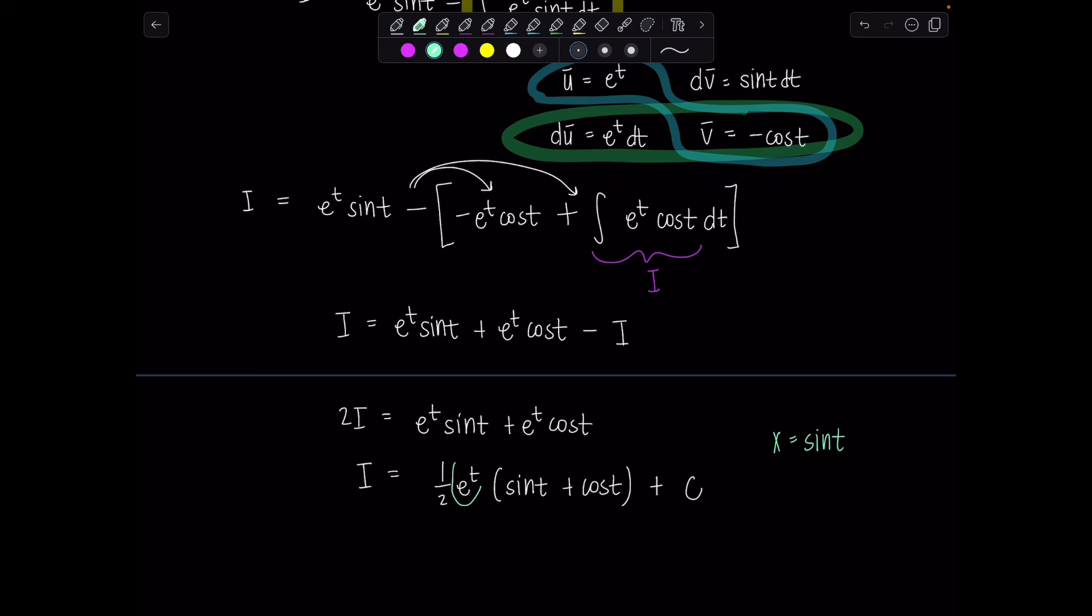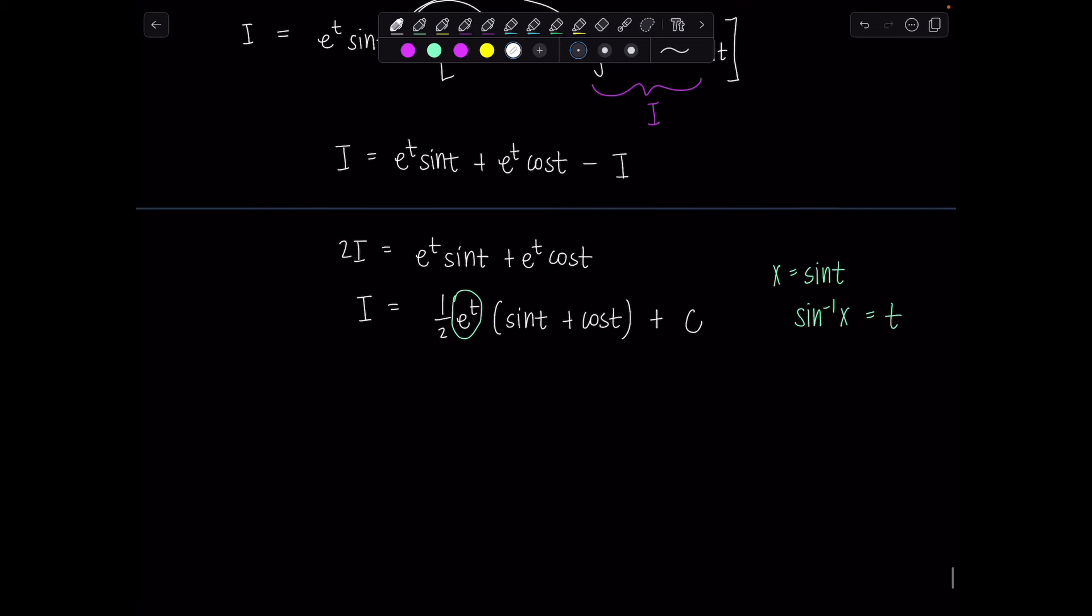Now we're not done. Because remember, the original variable in the problem was not t. It was x. So we got to get back there. So what was the substitution that we had made? We said that we let x equal sine t. And notice here we have just e raised to the t. So sine inverse or arc sine of x is going to be t. I can go ahead and replace that accordingly.